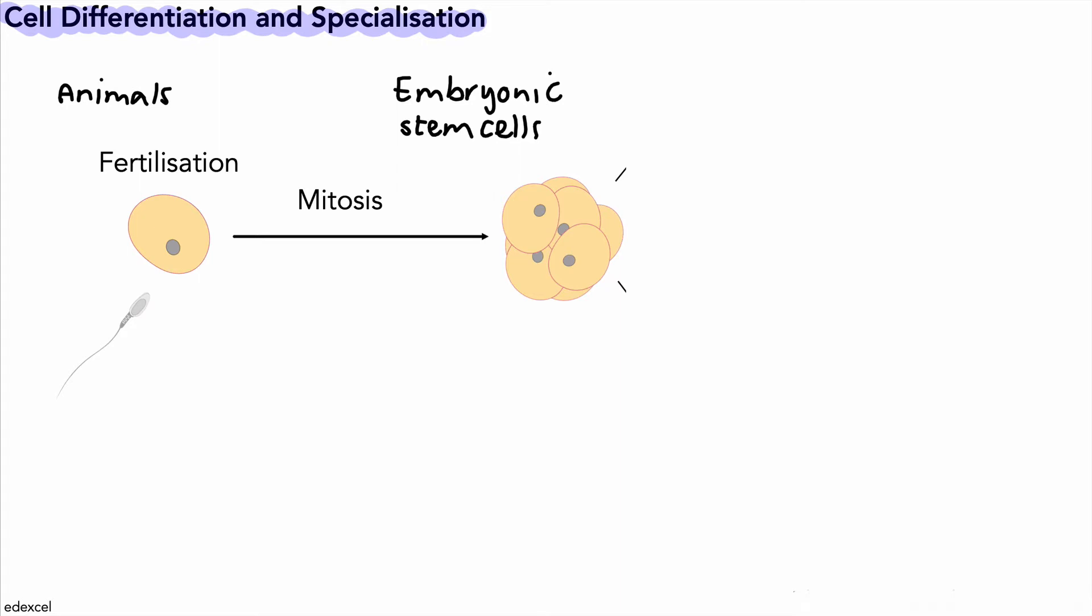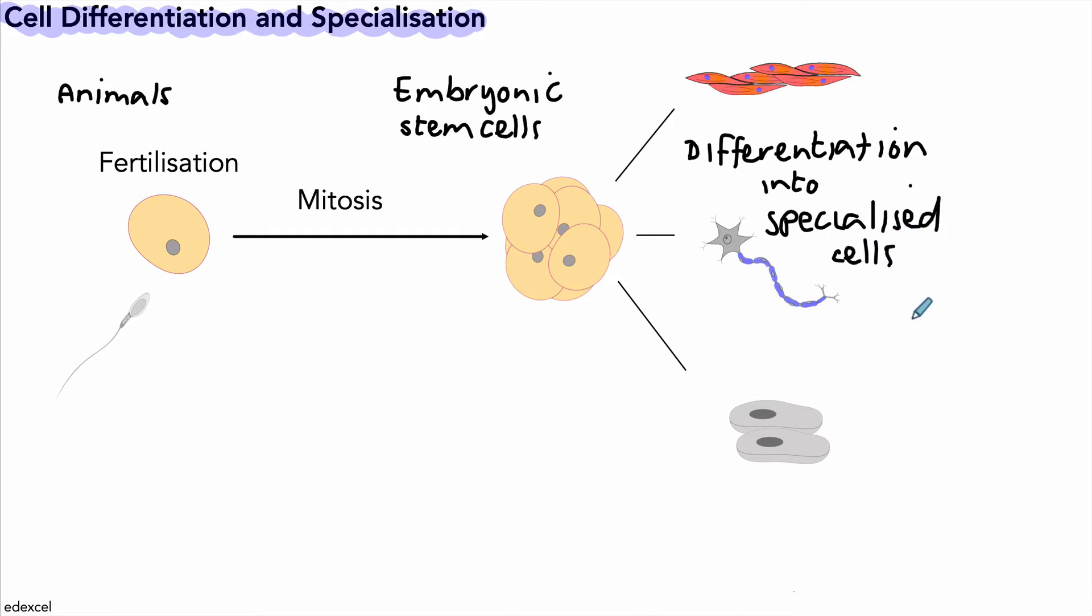And these cells can actually differentiate into other kinds of cells. So here's just three examples. This is the process of differentiation into specialized cells. And we've got just three examples here.